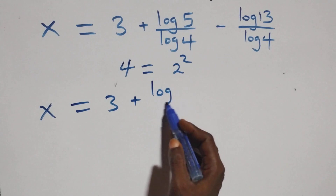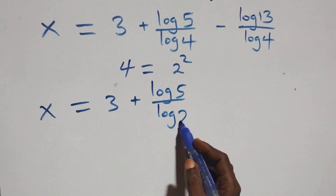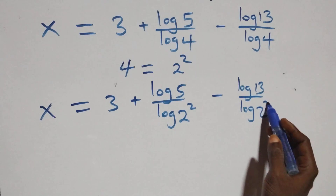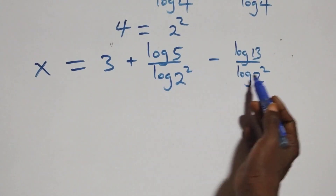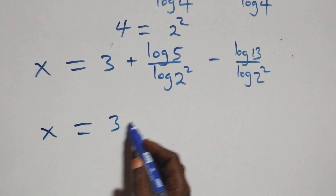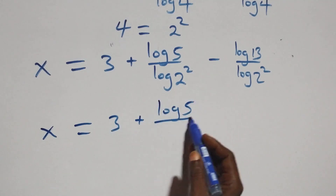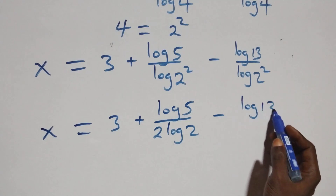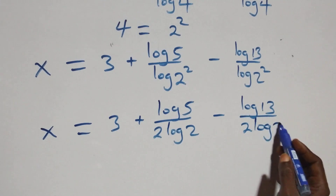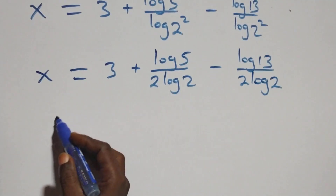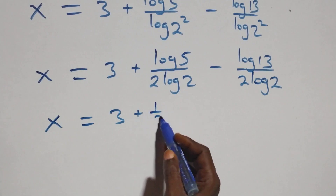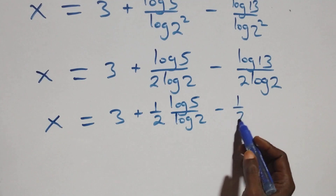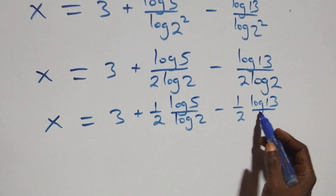Now we can write log 4 as log 2 squared, and applying the power rule of logarithm, 2 comes out. So we have x equals to 3 plus log 5 over 2 log 2 minus log 13 over 2 log 2.